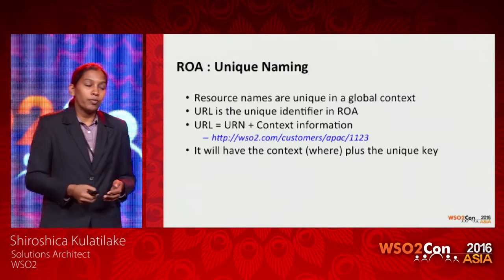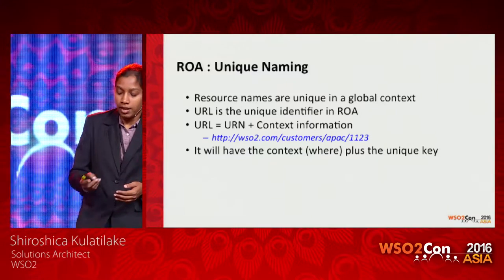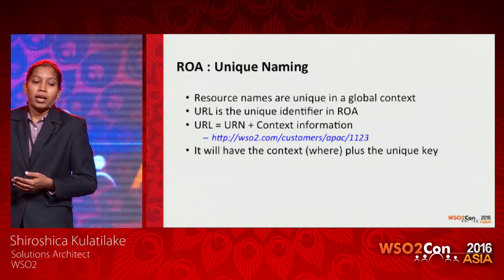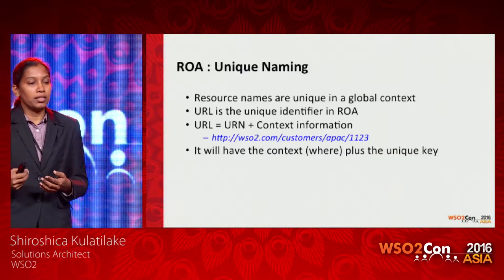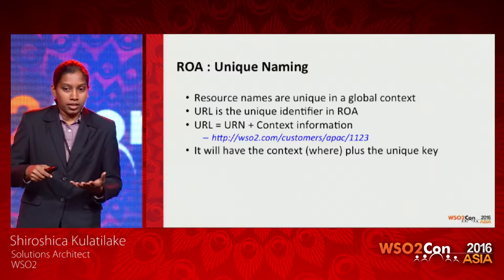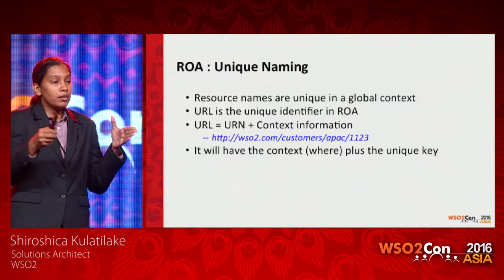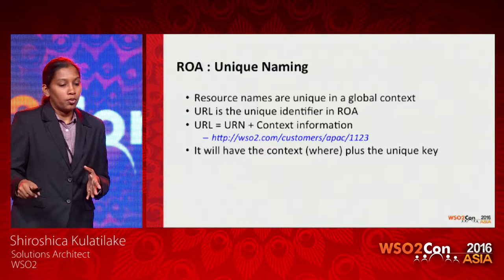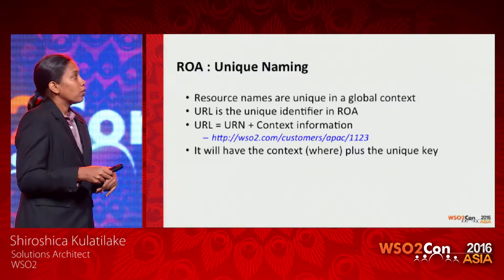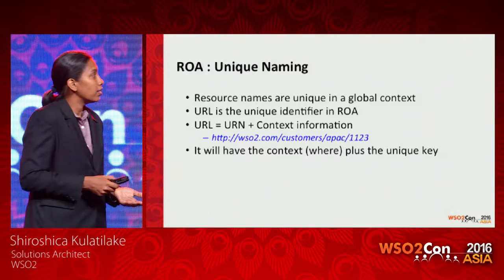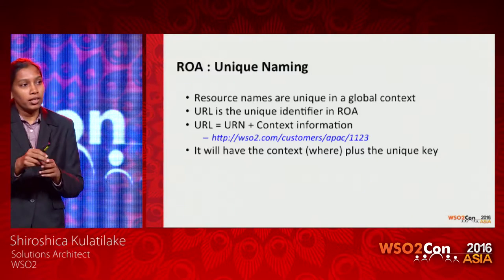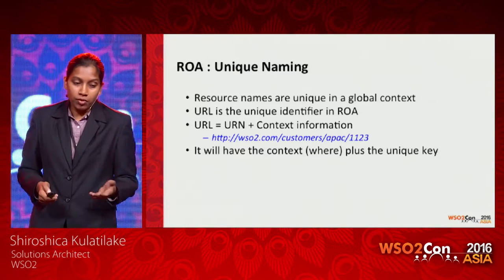Each and every interactable entity will be a resource, and these resources need to have unique names — uniquely named in a global context. In resource-oriented architecture, we usually use a URL with a bit of context plus a unique key. For example, we might be talking about a customer who belongs to WSO2's customer base and is in the Asia-Pacific region — that's the context — and then an identifier like 1123 to uniquely identify that specific customer.